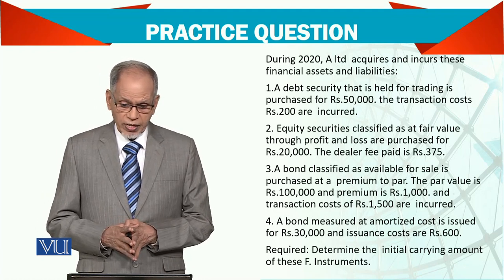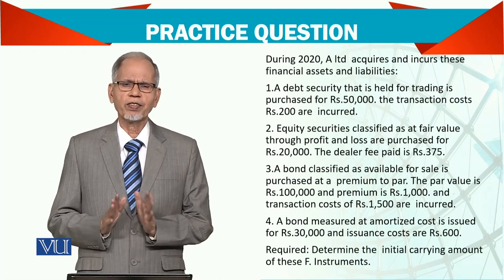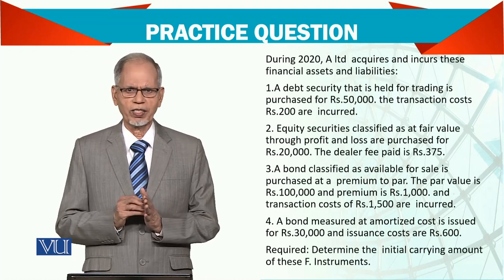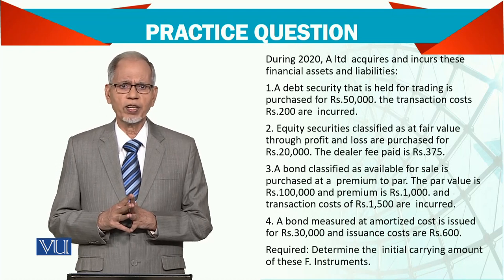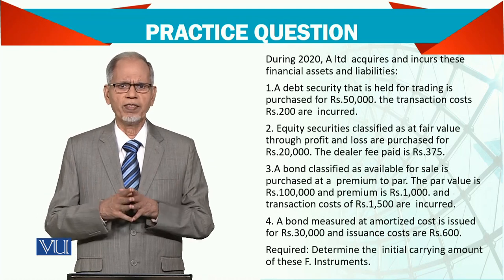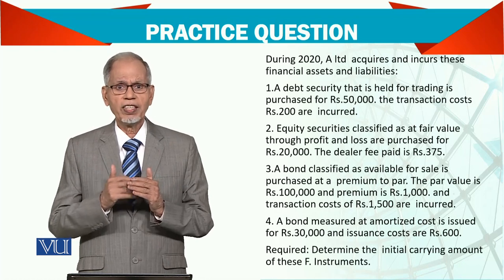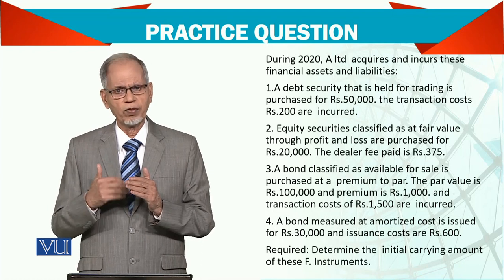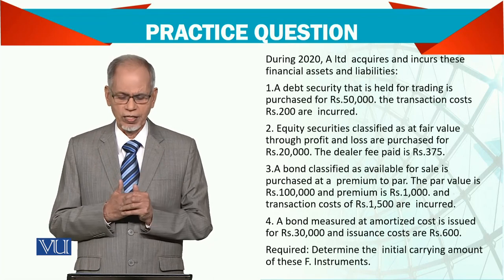A bond is measured at amortized cost — the amortization method. Amortization means, for example, you got a license and paid Rs.100,000 for 10 years. What you do is take that cost over 10 years, dividing by 10 at whatever rate applies. That is how you amortize your cost — that is what amortization cost means.